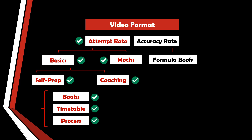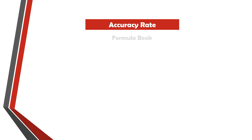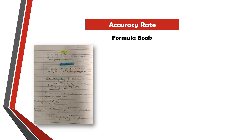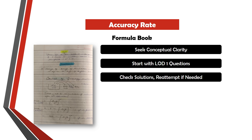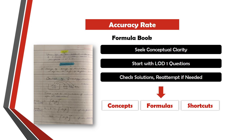To improve your accuracy rate, you can use a formula book. A formula book is basically a repository of all your concepts and formulas. In the process of preparation, when you go through the concepts, take up questions, and check their solutions, you will come across formulas, concepts, or tricks — note all of them down in a dedicated book called a formula book. I have linked my formula book in the description as well as in the suggested video above. I would highly recommend revising it every weekend because it helps in improving retention of the formulas and ultimately your accuracy rate.